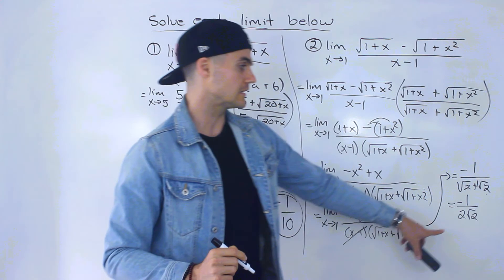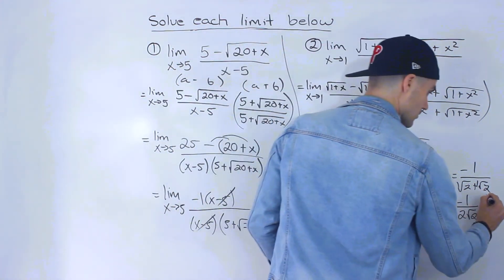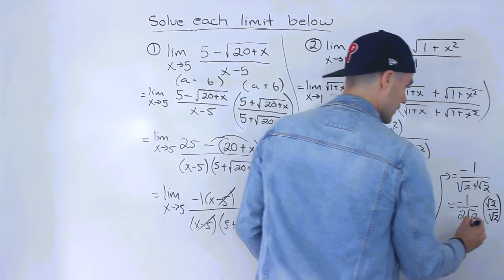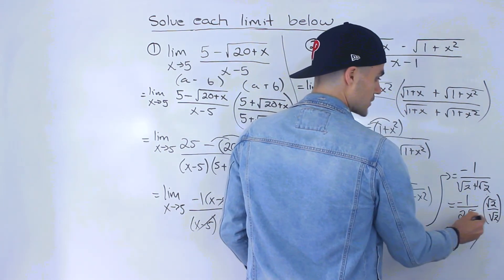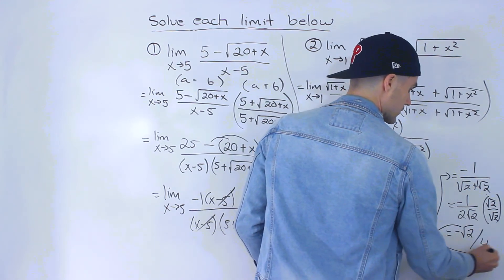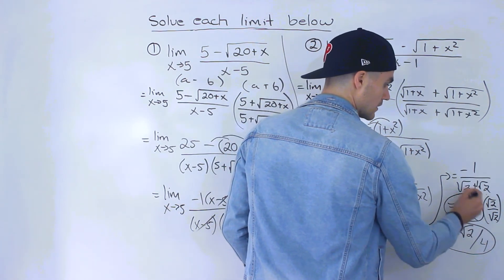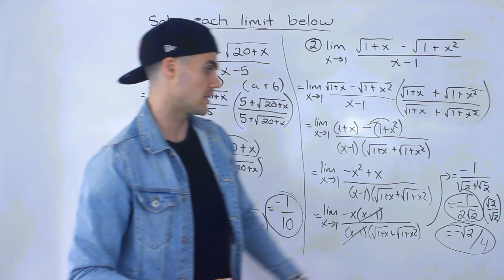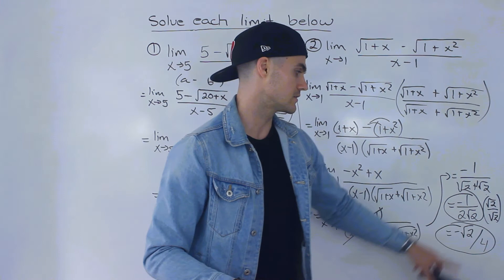If you don't want to leave a square root in the denominator, you can rationalize further by multiplying by root 2 over root 2. You'd get negative root 2 over (root 2 times root 2 is 2, times 2 is 4), giving negative root 2 over 4. So negative 1 over 2 root 2 or negative root 2 over 4 are the same thing — both answers work. If your teacher doesn't allow a square root in the denominator, you'd rationalize to get negative root 2 over 4.